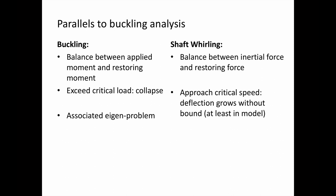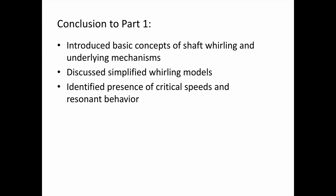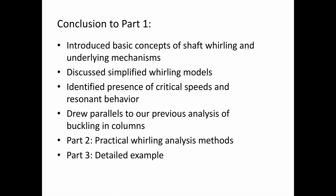Also in buckling there is an associated eigenproblem, and there is one with shaft whirling too — which we'll discuss in the next video. To conclude: in this first part we've introduced the basic concepts of shaft whirling, what it is and the underlying mechanisms, discussed simplified whirling models, identified the presence of critical speeds and resonant behavior, and drew parallels to buckling in columns. Moving forward into part two, we'll go through practical whirling analysis methods to predict behavior of more complicated shaft assemblies with multiple components. In part three, we'll go through a detailed example. Thank you.